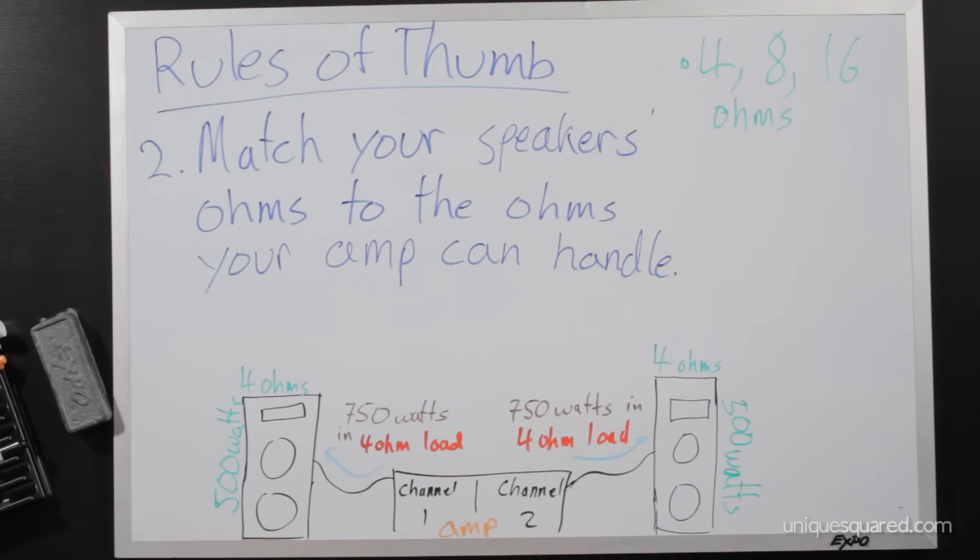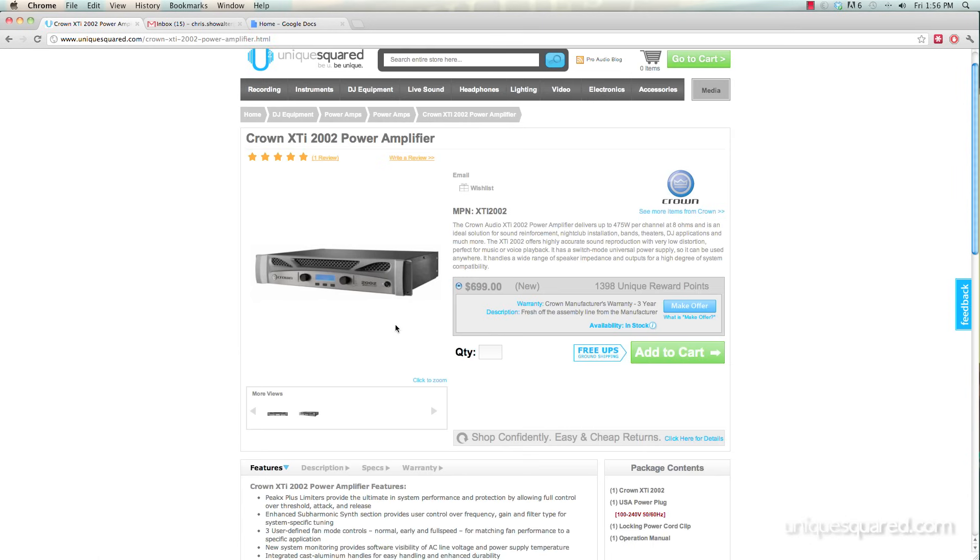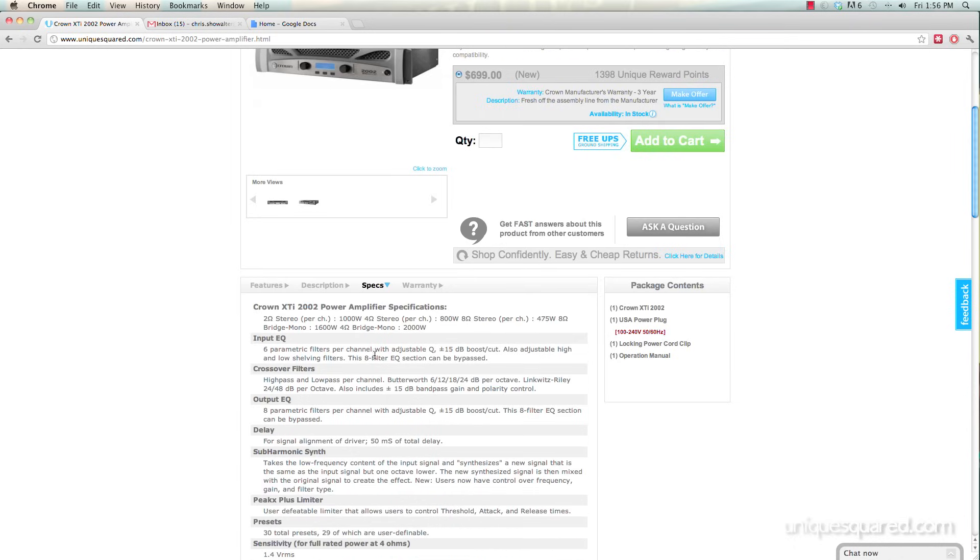That's why I decided to go with an XTI 2002 from Crown to power my JBL speakers. As you can see on the spec sheet, it's capable of pushing 800 watts in a 4 ohm load per channel, which means per speaker left and right. And honestly, I couldn't ask for a more perfect match. I've even got 50 extra watts of power per speaker. And now as you can see on the spec sheet, it's even capable of handling an impedance of 2 ohms, which is handy.